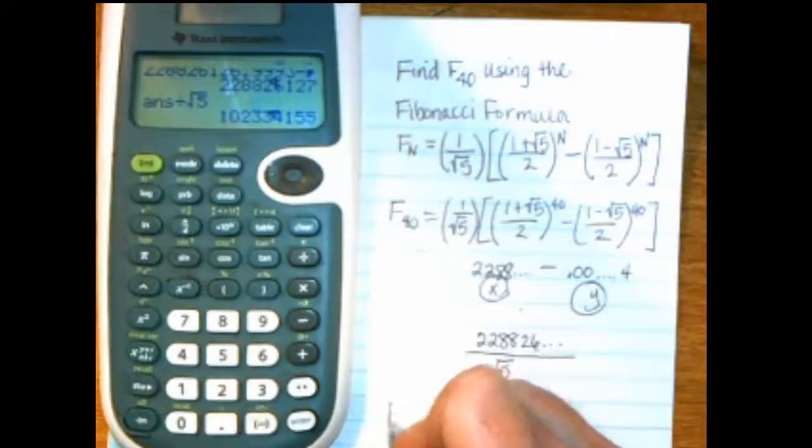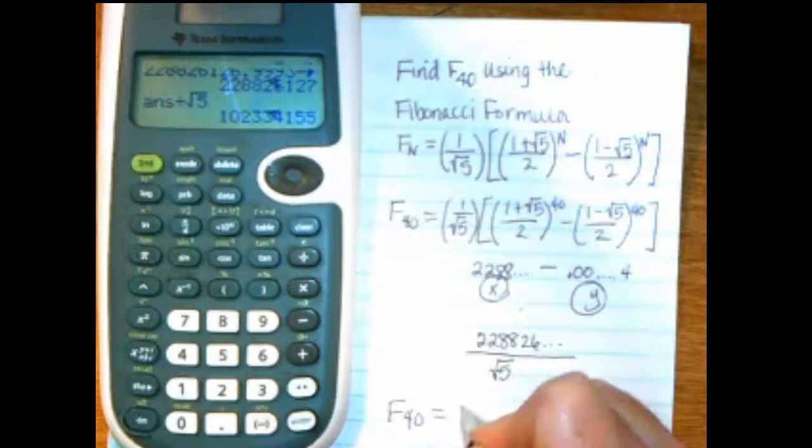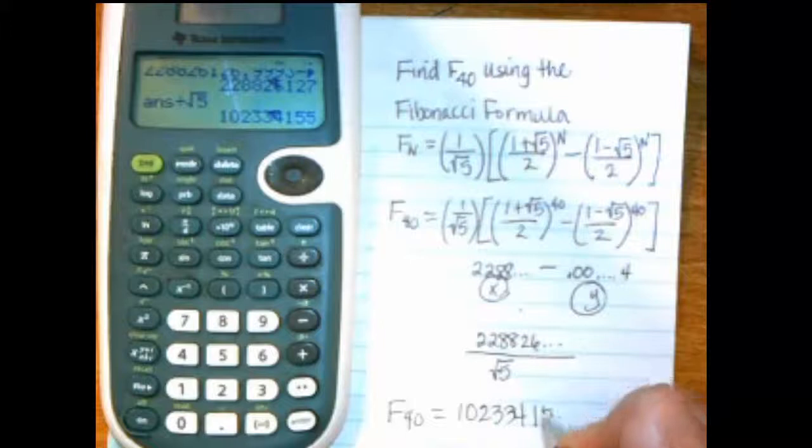And F sub 40, therefore, 1, 0, 2, 3, 3, 4, 1, 5, 5.